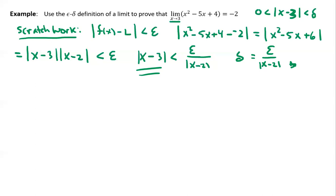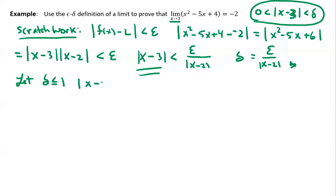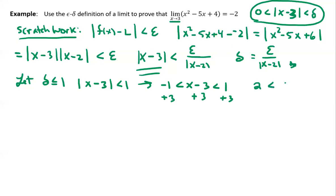What we're going to do is we're allowed to actually restrict delta to what we want. We're going to let delta be less than or equal to 1. If delta is less than or equal to 1, we can say that the absolute value of x minus 3 is less than 1. Using what we know about absolute values, this leads us to: negative 1 is less than x minus 3, which is less than 1. Adding 3 to all parts, we get 2 is less than x, which is less than 4.